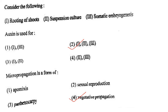Next one: Consider the following — rooting of shoots, suspension culture, somatic embryogenesis. Auxin is used for options 1 and 2. Answer is option 2: 1, 2 and 3 — that is rooting of shoots, suspension culture, and somatic embryogenesis.